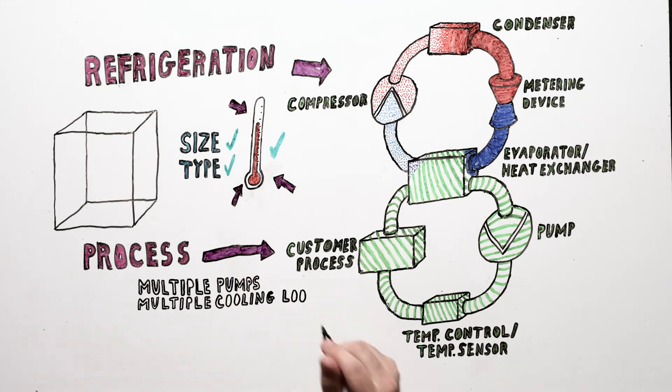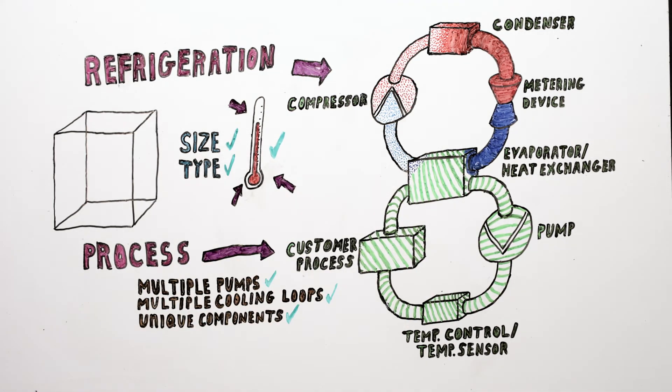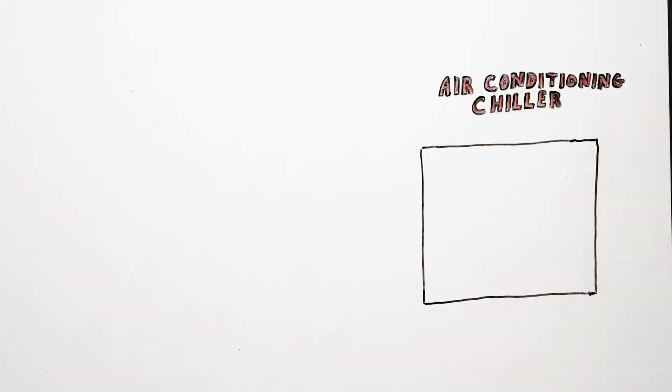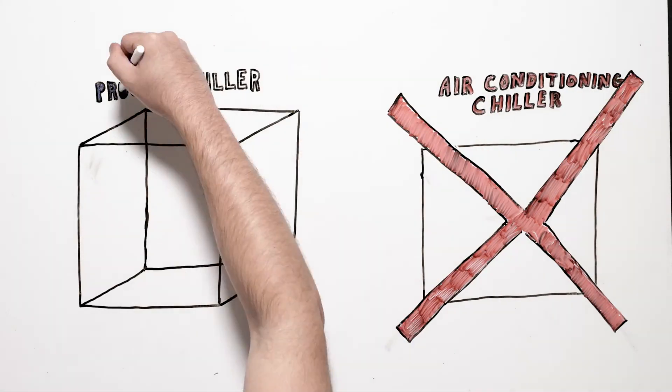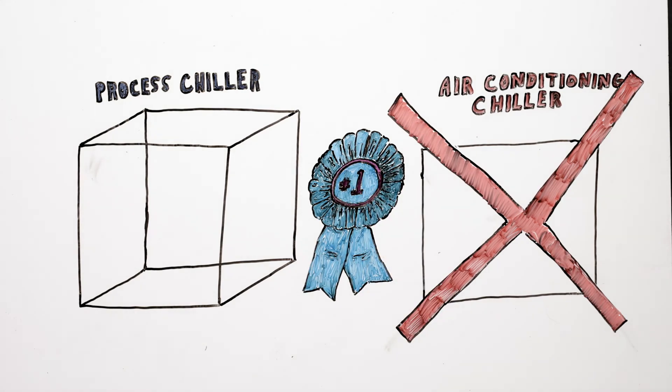Some process circuits operate with multiple pumps, multiple cooling loops, or other unique components. Unlike an air conditioning chiller, a process chiller can be utilized in a wide range of different processes within a facility.